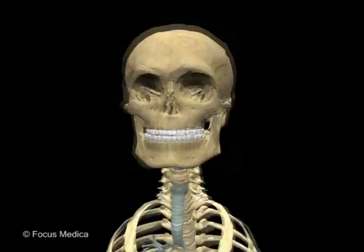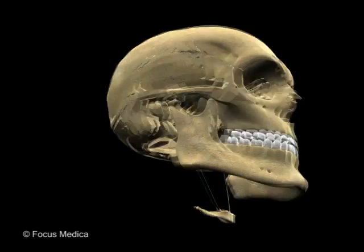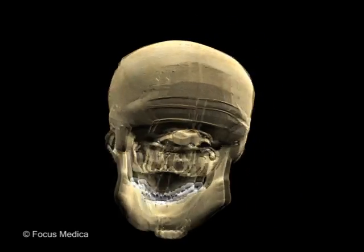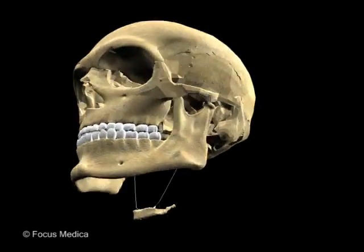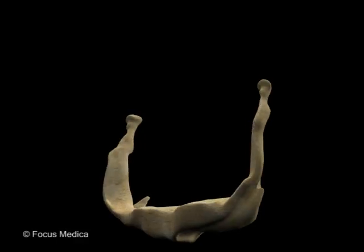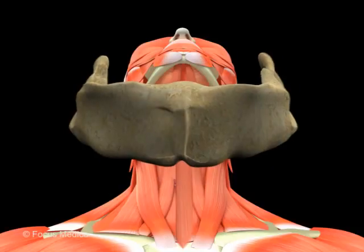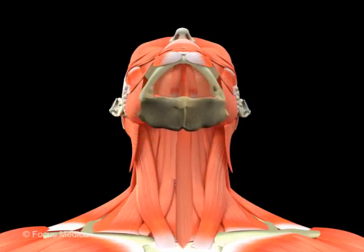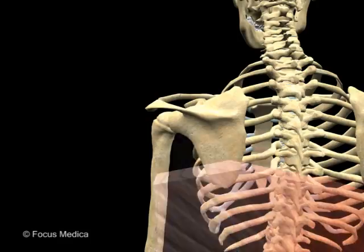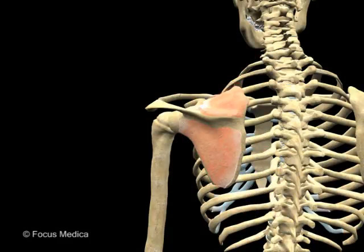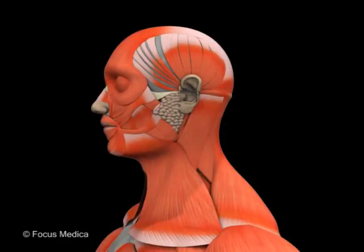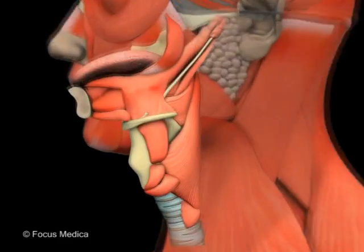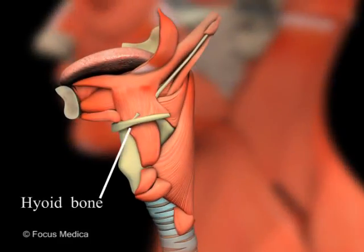It is unusual that this bone does not articulate with any other bone. Its size is deceptive since it gives attachment to several muscles of the pharyngeal region. Like the scapula, it is held in position by the muscles and ligaments which attach to it.